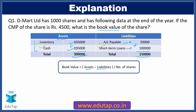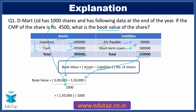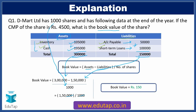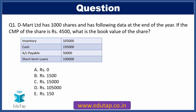Now we place the proper values in the formula. Assets total Rs. 3,00,000 minus liabilities total of Rs. 1,50,000 gives Rs. 1,50,000, divided by 1000 shares. Cancelling three zeros from numerator and denominator, we arrive at book value of share equal to Rs. 150. Moving back to our question, option E — Rs. 150 — is the correct answer.